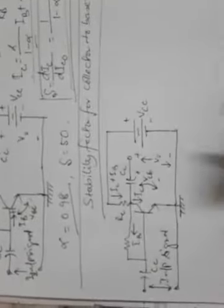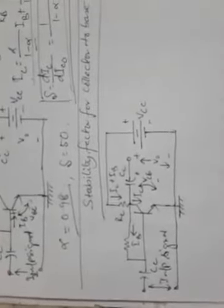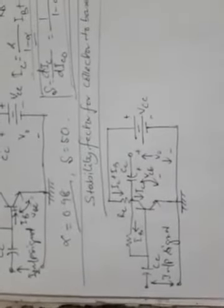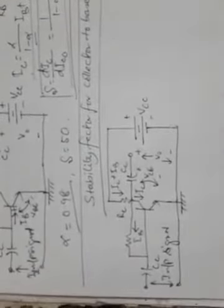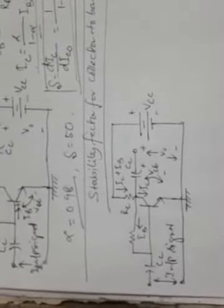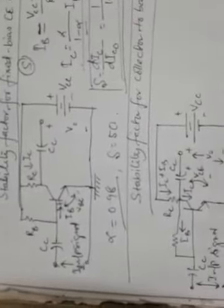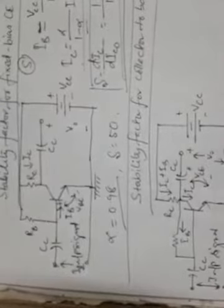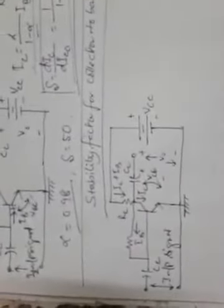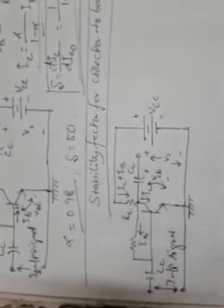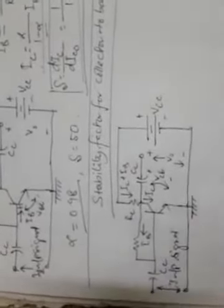Let us now discuss about the collector-to-base bias circuit and its calculation of stability factor S. This is the basic collector-to-base bias circuit. In this circuit, the resistance RB is connected between the base and collector of the transistor, rather than between the base and the positive terminal of the battery. This is a basic difference from the fixed bias circuit, which was discussed in a previous lecture.